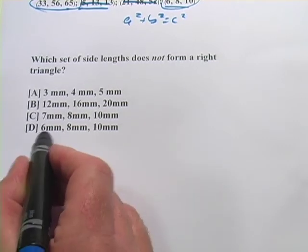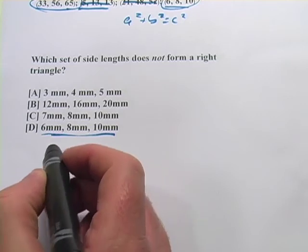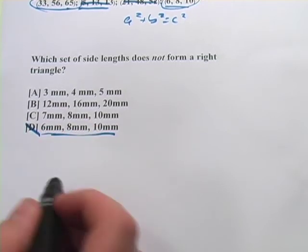Well, here's our old friend 6, 8, 10. That's a multiple of 3, 4, 5 triangles. So that one is a right triangle, and we're looking for the one that's not.